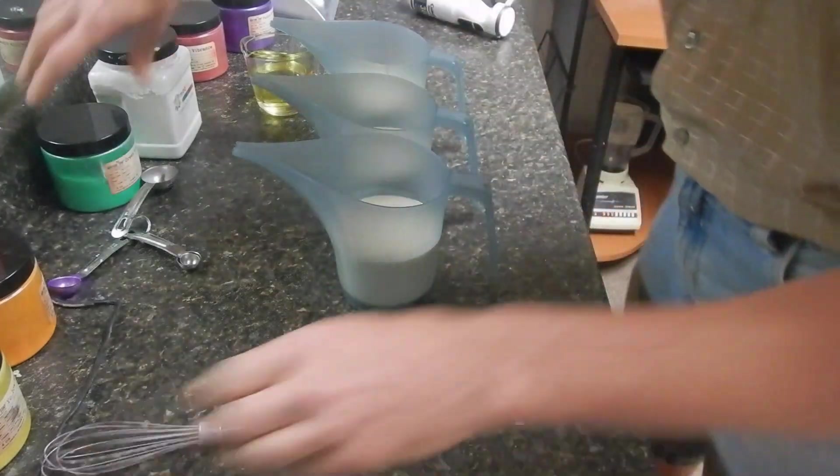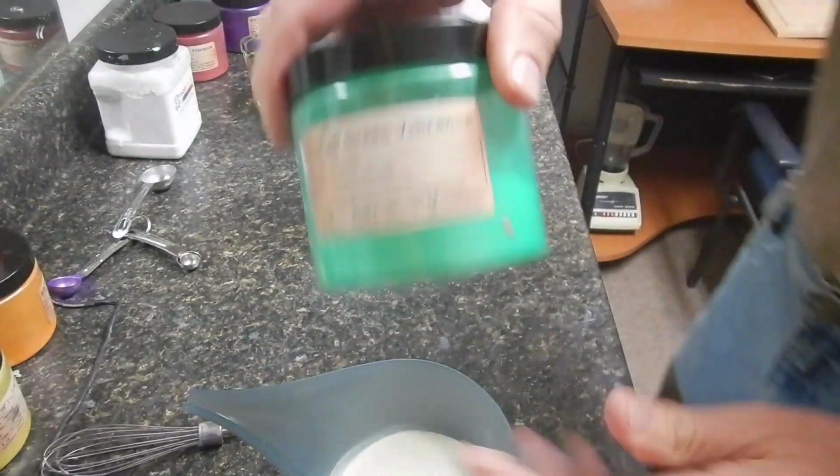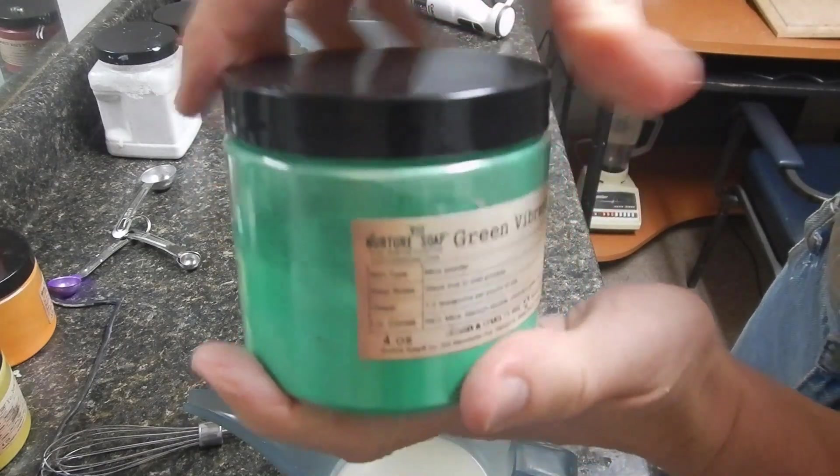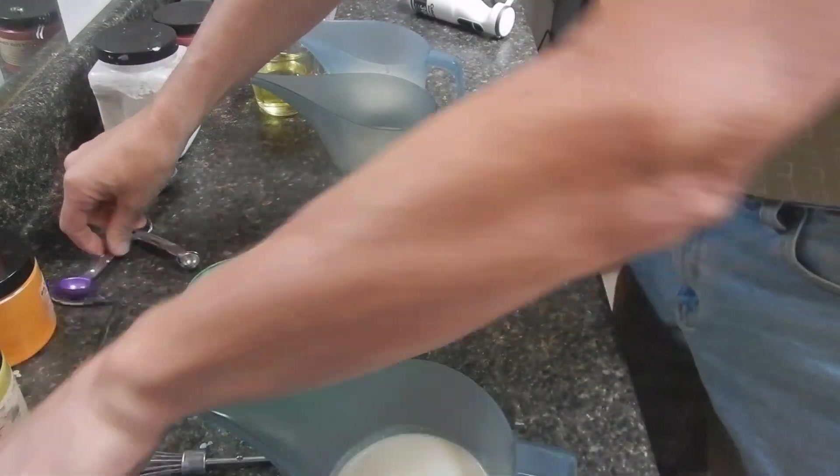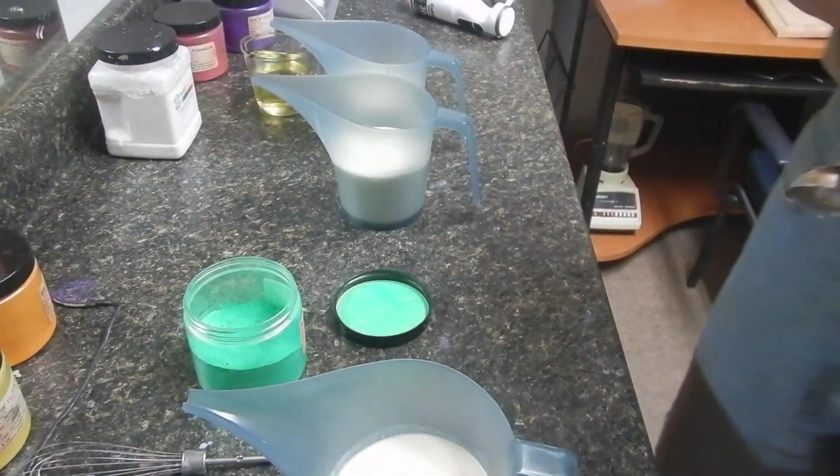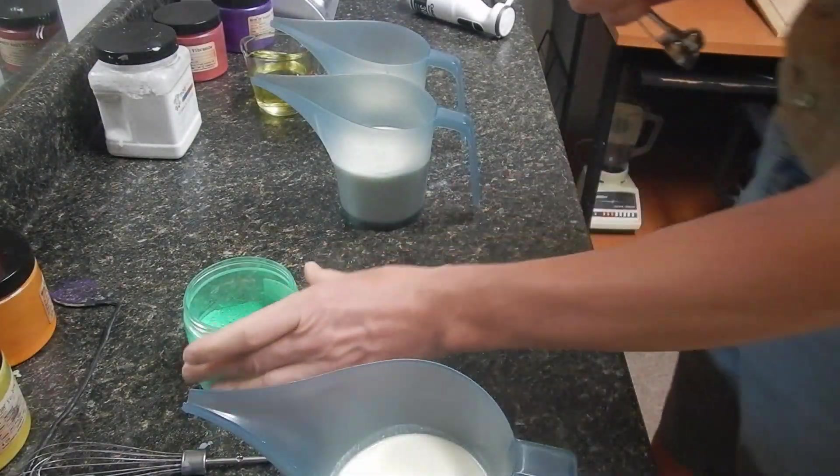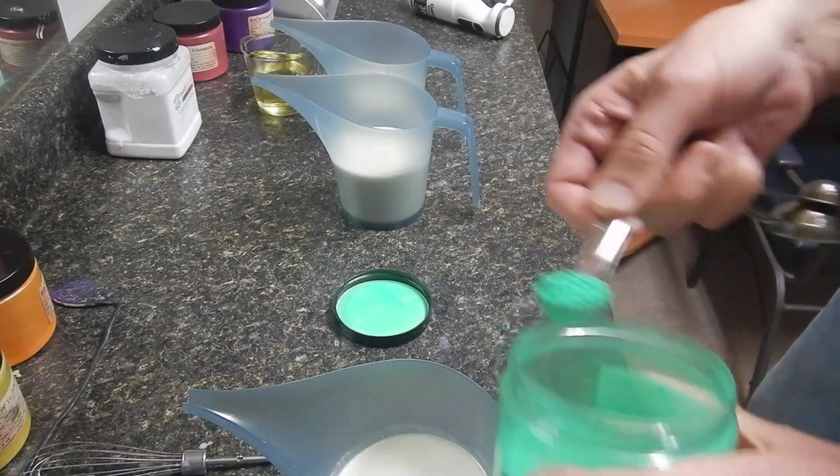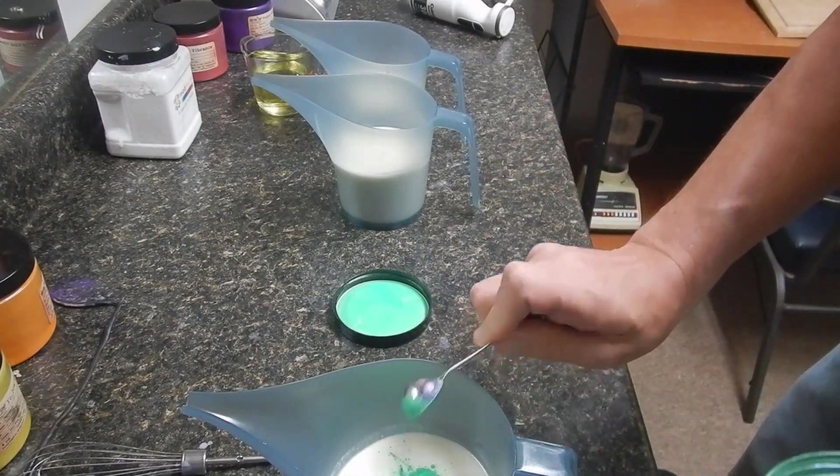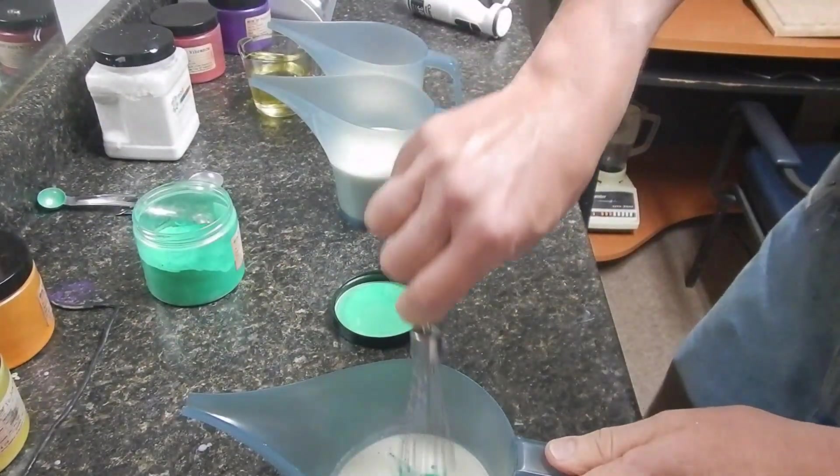The next is Nurture Soap's Green Vibrance. And most of you probably know Green Vibrance goes a funky green when it hits the lye solution, but it always comes back to its normal color. I don't know what it's going to do with all this TD. I imagine it probably will to a certain extent at least.